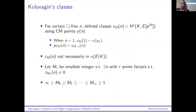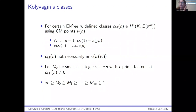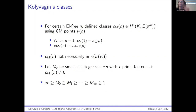What did Kolyvagin do? For certain squarefree conductors N, Kolyvagin defined cohomology classes with values in the torsion points of E — so Galois cohomology classes — using these CM points Y(N). A few things to highlight: these N are really squarefree, so if you're an Iwasawa theorist you might want to take large powers of P as the conductor, but that's not what we're doing here. When N is one, this is exactly the classical Heegner point.